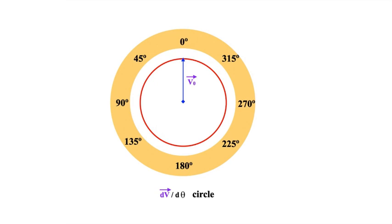So here I've drawn a dv/dθ circle. And I've drawn in also v naught. And I've put the tail of v naught right here at the center of the circle.